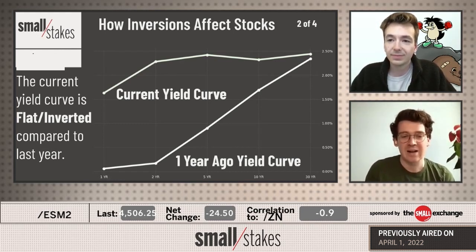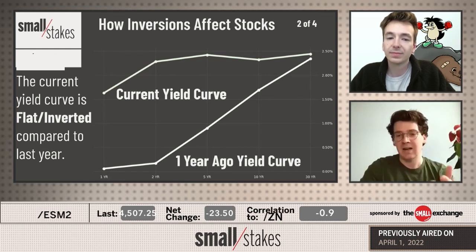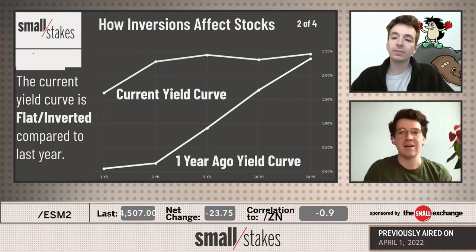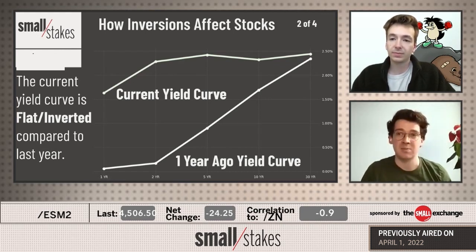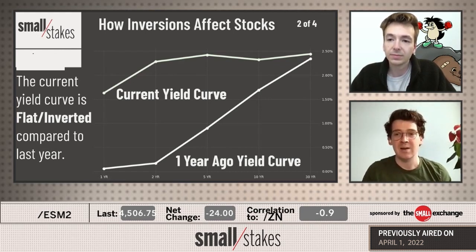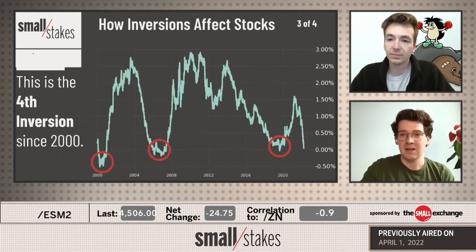And that's where you get that flat inverted talk that everybody is discussing these days. This comparison is useful — a year ago is where we normally are. Even last year, in the midst of the pandemic, we still had a relatively normal yield curve. Nine years out of ten we'll have that upward sloping yield curve, and that's why it becomes such an interesting trade.